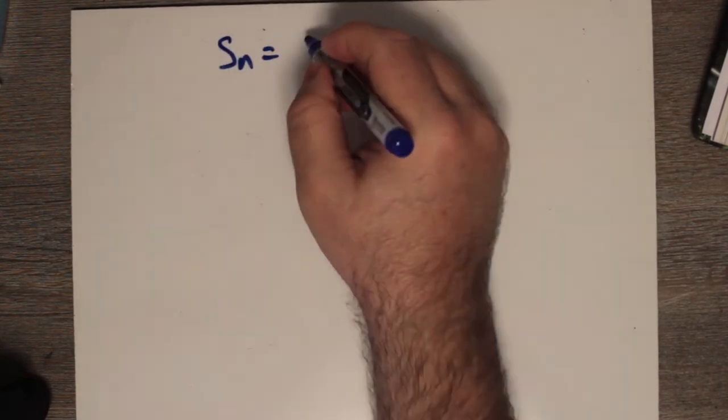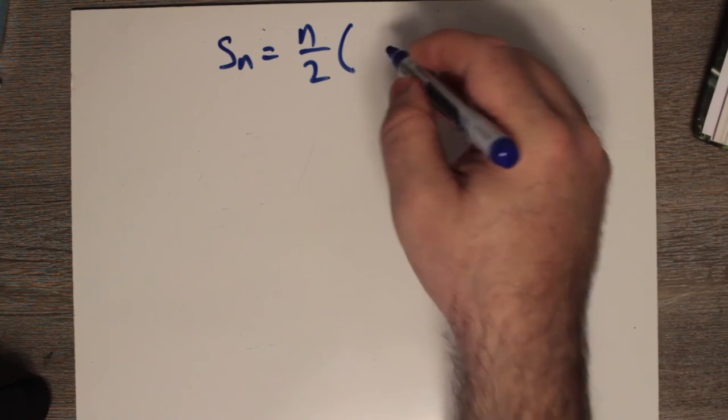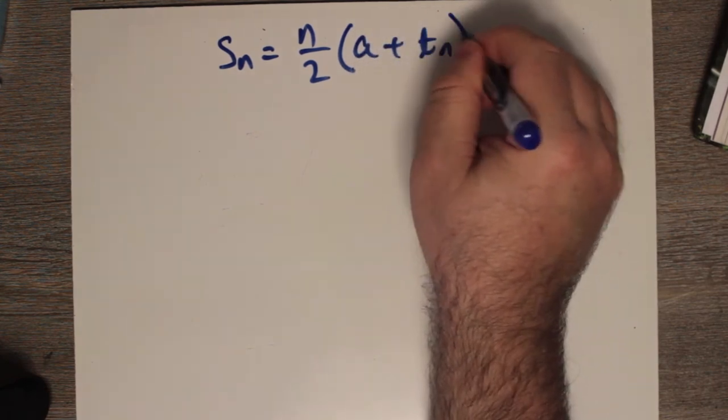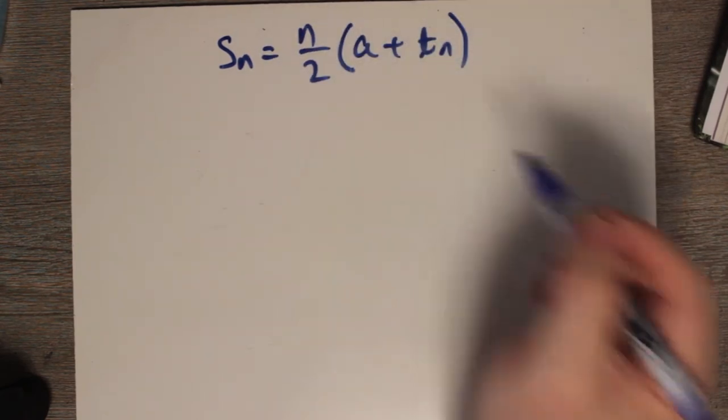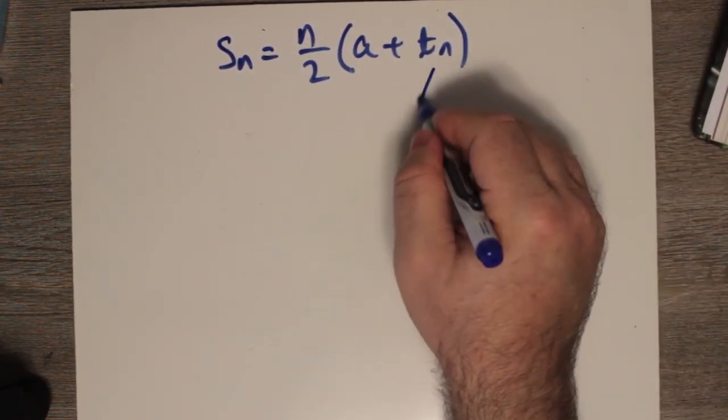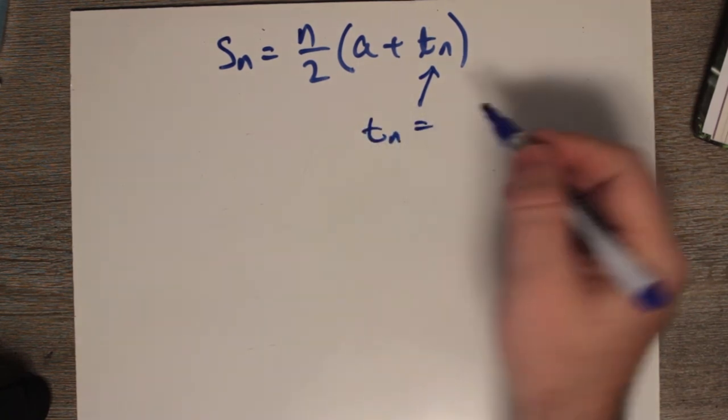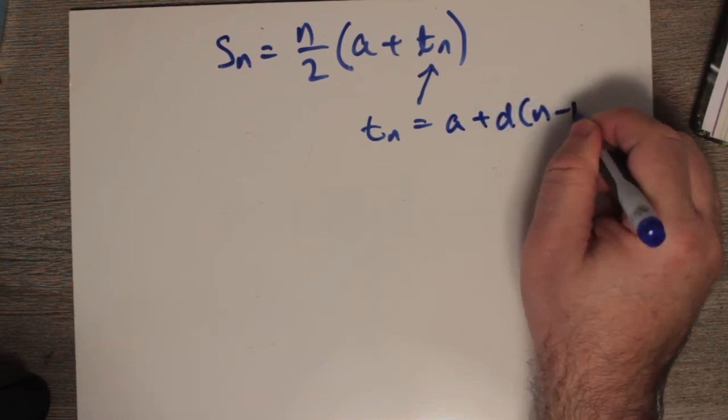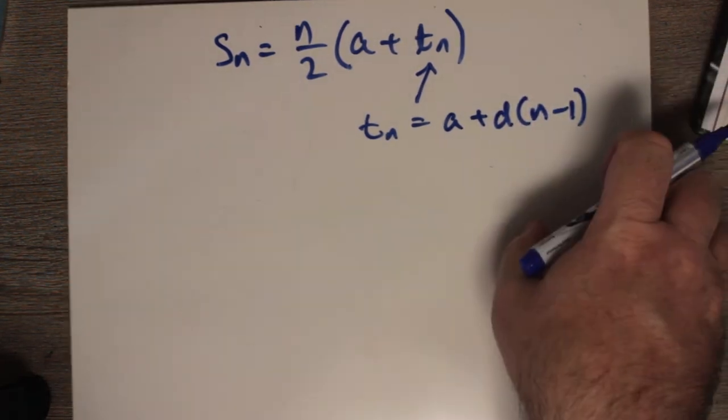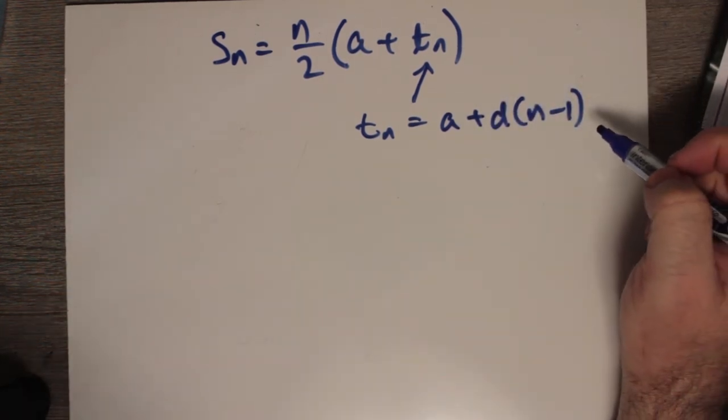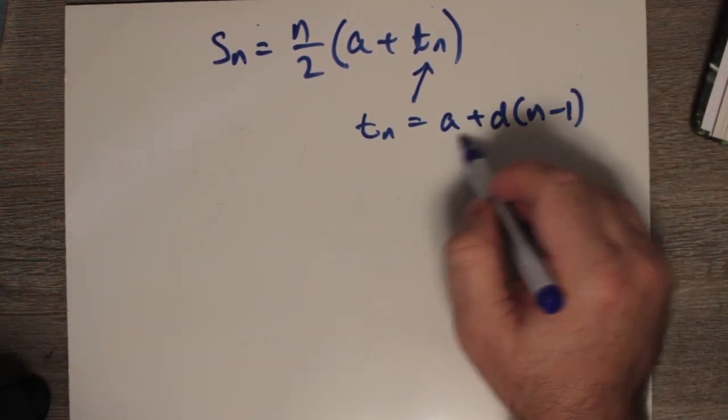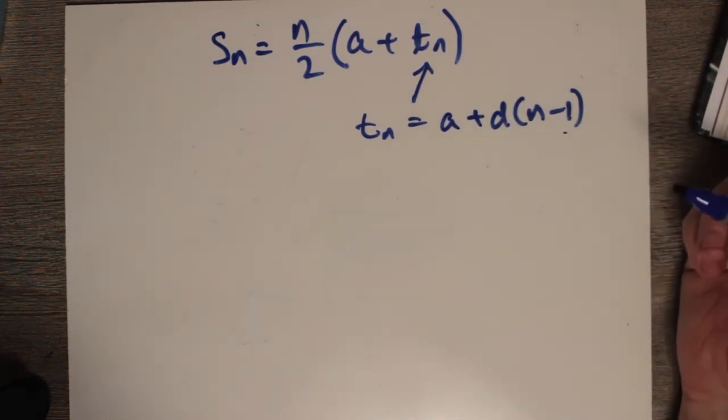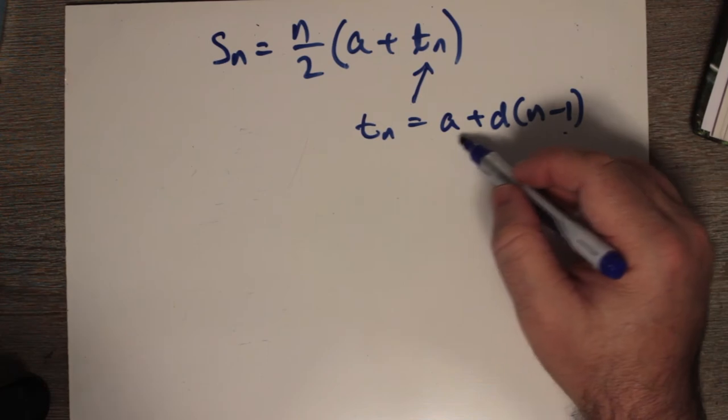You might want to know something else. Remember the summation Sn which was equal to n/2 multiplied by a plus tn. There's another way of expressing this formula, and that's because tn is really equal to a plus d times (n - 1). If we substitute this, you don't even need to know the nth term, you just need to know a and d and how many terms there are.